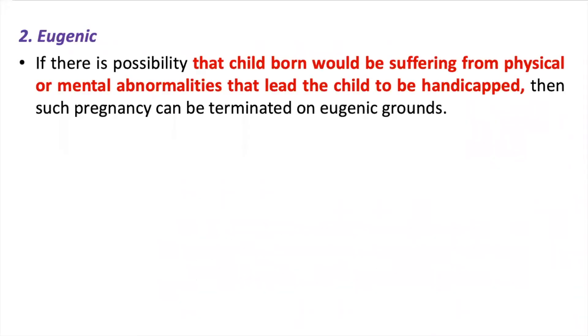Second one is Eugenic. If there is a possibility that the child born would be suffering from physical or mental abnormalities that lead the child to be handicapped, such pregnancy can be terminated on eugenic grounds.